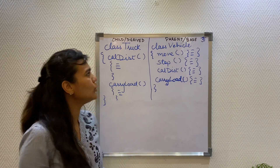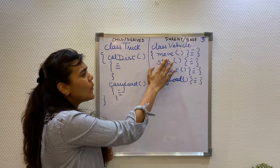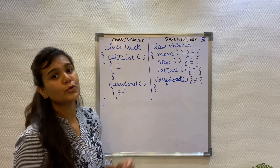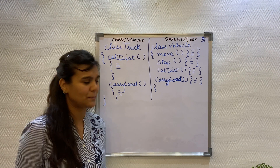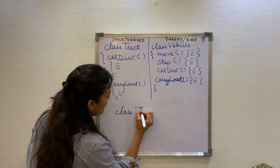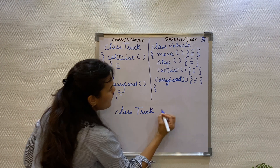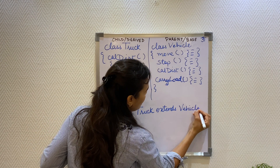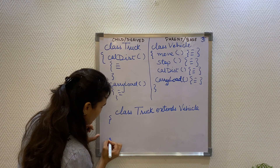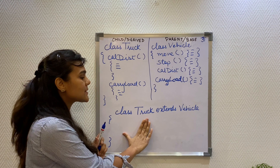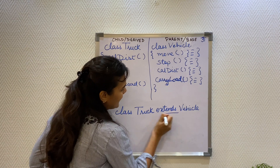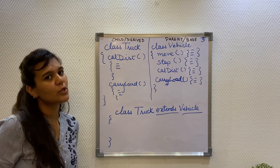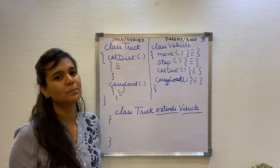You might be wondering how exactly the truck class is able to inherit the move and stop functions of the vehicle class. In Java, we use the extends keyword. I am going to rewrite the class truck definition to show you how exactly the extends keyword is used. As you can see, our child class — the truck class — is able to extend all the properties and behaviors of the base class, the vehicle class. In Java, we use the extends keyword. This could change to any other keyword or symbol in different languages — for example, in C#, we use the colon operator.